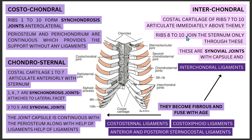At the interchondral joint, the costal cartilages of the ribs articulate among each other with the rib immediately above. Ribs 8 to 10 join the sternum only indirectly through these interchondral connections. These are also synovial joints with a capsule around them, and the ligaments present are called interchondral ligaments because they are present between the cartilages. Both the interchondral and chondrosternal ligaments become fibrous and fuse as you age — this is a feature these two joints have in common.